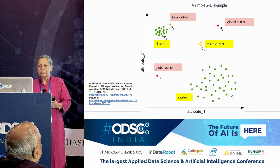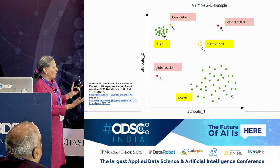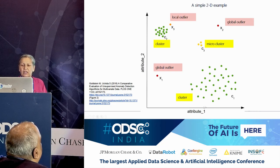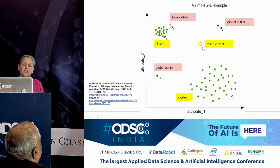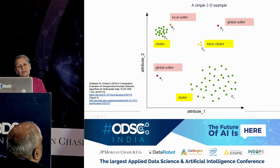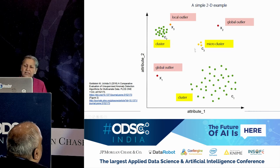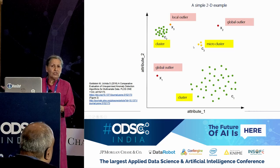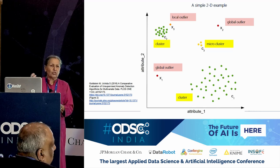A simple example: if you have data with two attributes and you plot them, you see clusters. A global outlier doesn't belong to any cluster. A local outlier is close to a cluster but still anomalous. When we use clustering for anomaly detection, we look at the small clusters because we consider those anomalies.